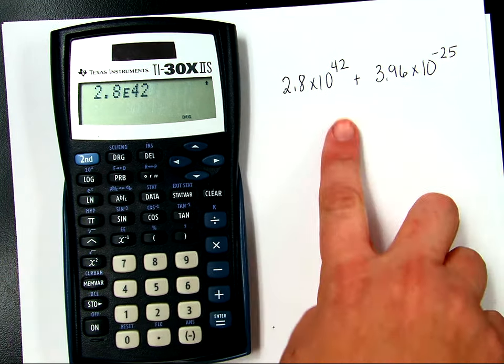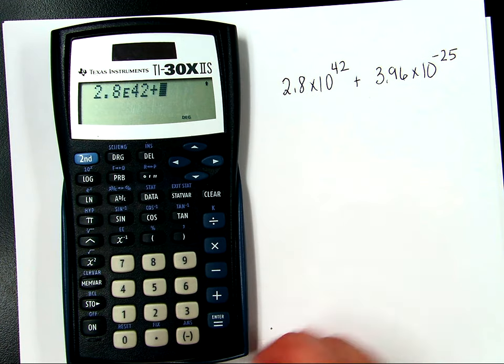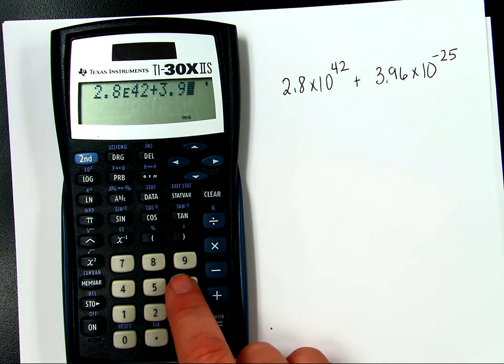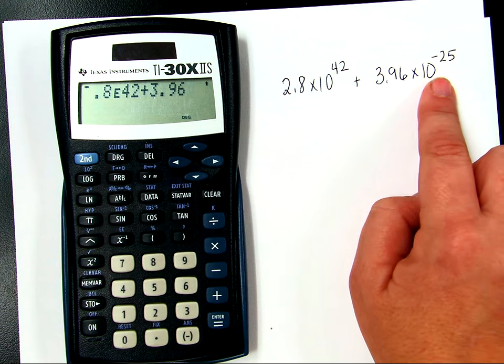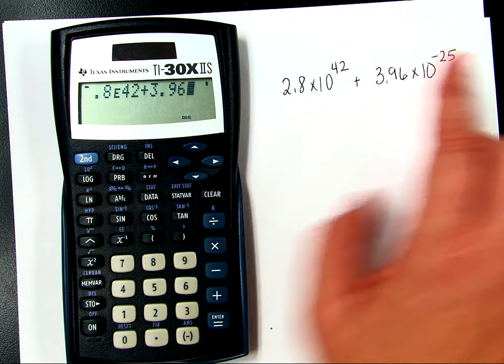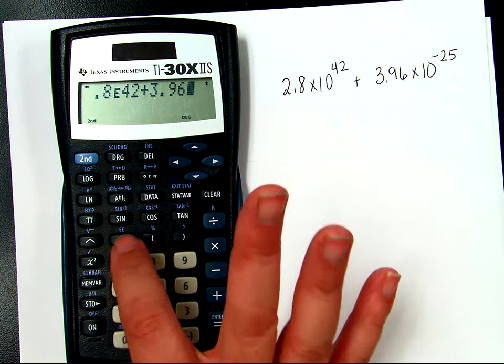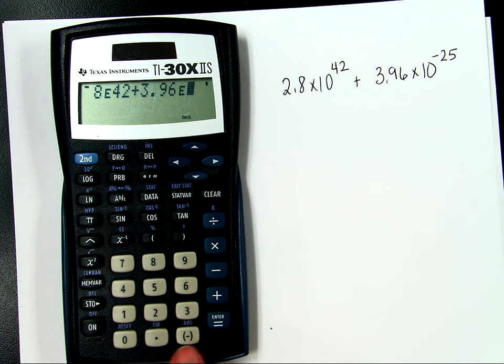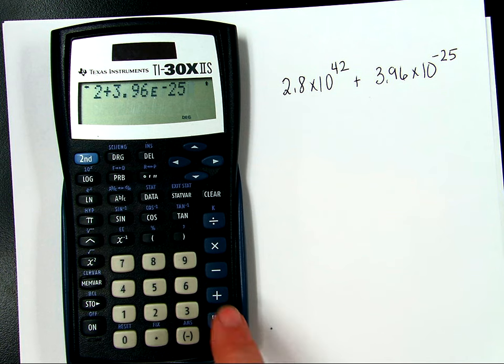I can now add plus 3.96. Now, this second number has a negative exponent. So for this calculator, I'm going to hit second function, EE. I do have a negative key down here in the corner. So look down here with my finger, and it will be negative 25. And at this point, I can just hit equals.